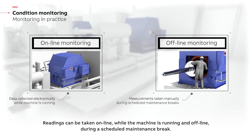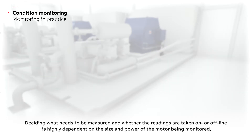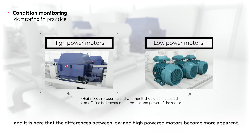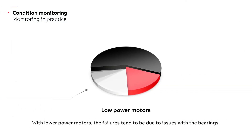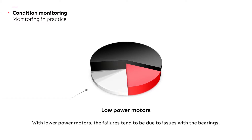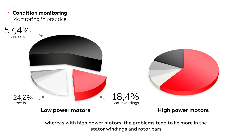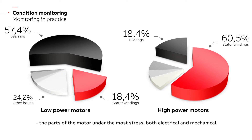Deciding what needs to be measured and whether the readings are taken on or offline is highly dependent on the size and power of the motor being monitored. It is here that the differences between low and high powered motors become more apparent. With lower power motors, the failures tend to be due to issues with the bearings, whereas with high power motors the problems tend to lie more in the stator windings and rotor bars.